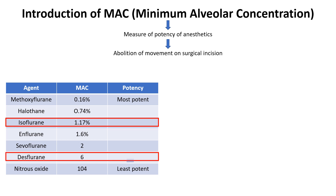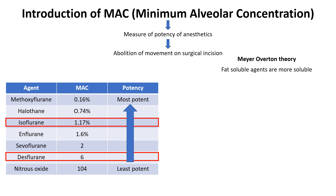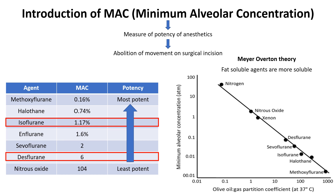In contrast, desflurane has a higher MAC of about 6%, indicating that a higher concentration is needed to achieve the same effect. MAC is closely related to an anesthetic's solubility in fat, which is expressed as its oil-gas partition coefficient and described by the Meyer-Overton rule. An anesthetic with a high oil-gas partition coefficient is more soluble in lipid-rich tissues, such as the brain, allowing it to accumulate there more easily. As a result, these anesthetics require lower concentrations in the alveoli to achieve the desired effect, since they rapidly partition into the brain, which has a high lipid content.